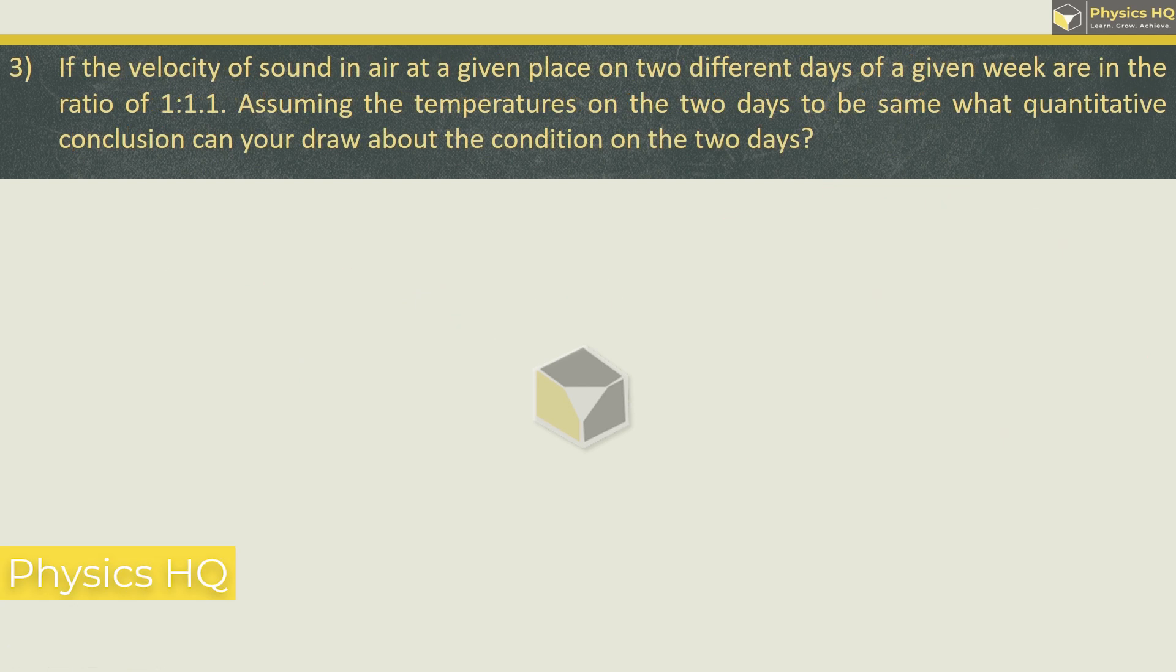Next problem. If the velocity of sound in air at a given place on two different days of a given week are in the ratio 1 is to 1.1, assuming the temperature on the two days to be same, what quantitative conclusion can you draw about the condition on the two days? Temperature is same, so here we will be talking about density and velocity. Density ka relation is inversely proportional under root. What they have given is v1 upon v2 is 1 upon 1.1 or you can say v2 is 1.1 times v1 or in simple words v2 is greater than v1. So second day pe velocity was higher compared to first one.